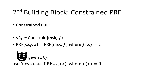Our second building block is a constrained PRF. A constrained PRF has a constraint pseudorandomness property. Given an original key of the PRF — which we call the master secret key — we can constrain the key with respect to a function f. The PRF evaluates correctly on the constrained key when the input satisfies the functionality f. However, if the adversary is given a constrained key, it is not able to evaluate the PRF on any inputs that do not satisfy the function. More formally, it cannot distinguish evaluations on those inputs using the original master secret key from uniform random values. Here we only need single-key adaptive secure pseudorandomness.